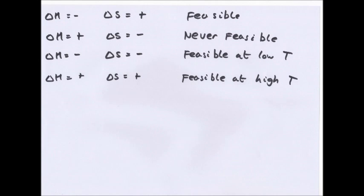When delta H is negative and delta S is positive, the reaction is always feasible. That's because you end up having a negative divided by a positive, which will come out a negative. So basically any temperature makes the reaction feasible.